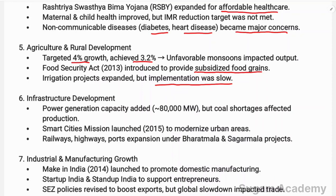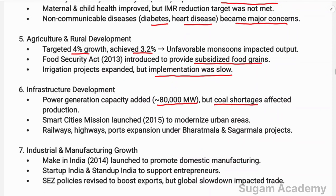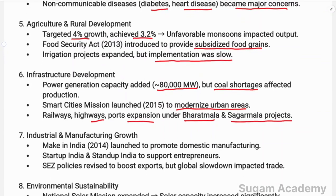In infrastructure development, power generation capacity of 80,000 megawatts was added, though coal shortage affected production. The Smart Cities Mission was launched to modernize urban areas. Railway, highway, and port expansion was carried out under the Bharat Mala and Sagarmala projects.